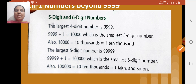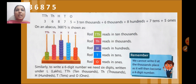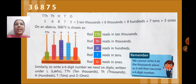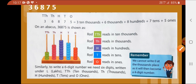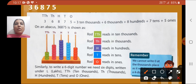Now, just try to read the number on the extreme left side at the top. This number is 36,875. Can you read this number, children? Yes, you can — it is thirty-six thousand eight hundred seventy-five.